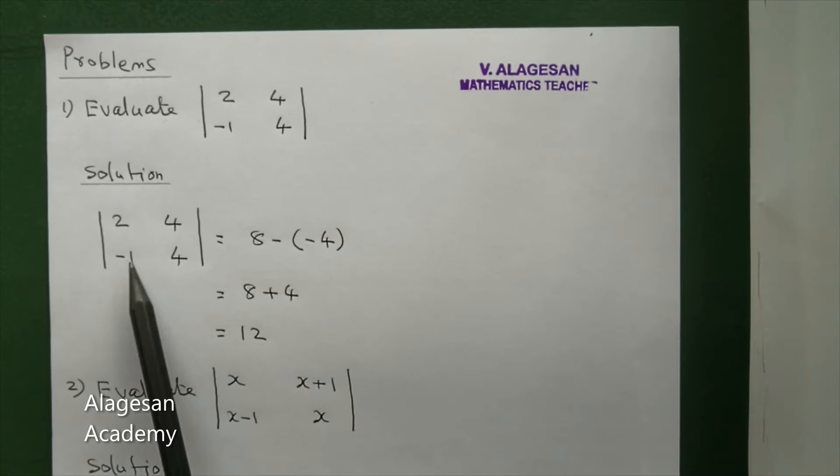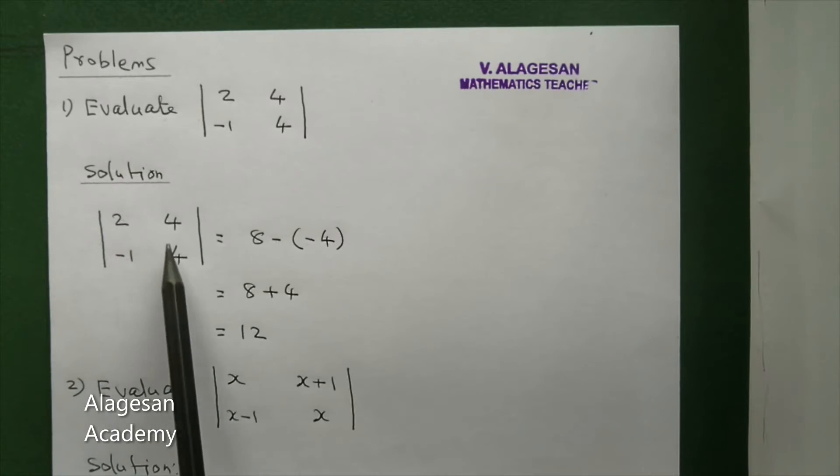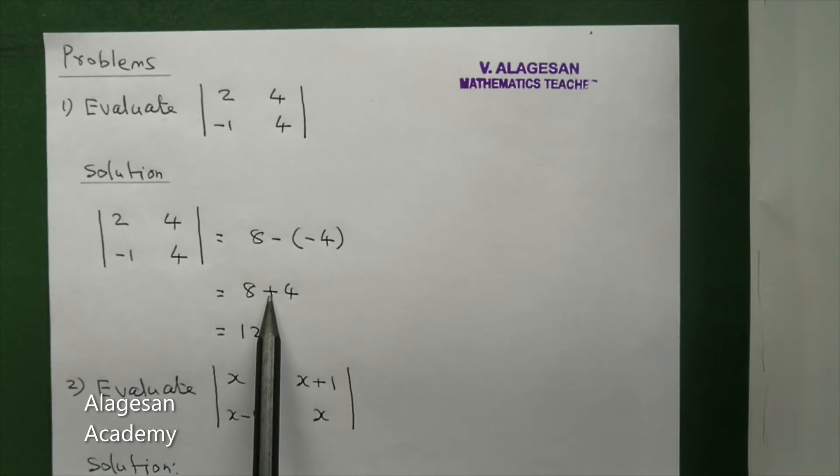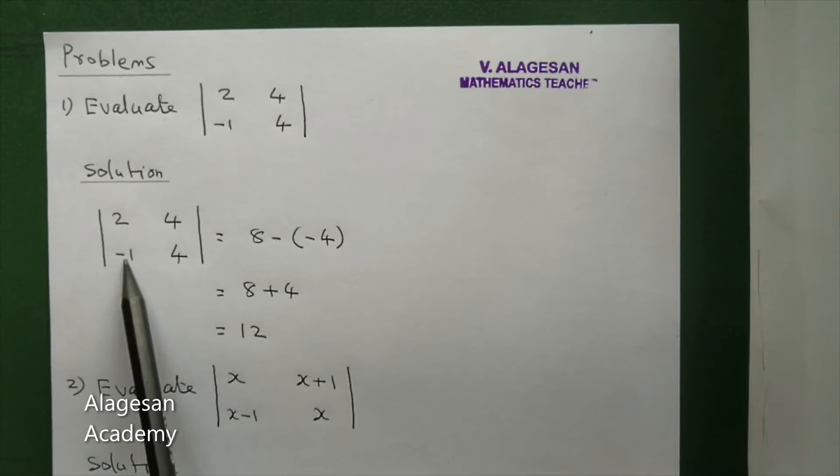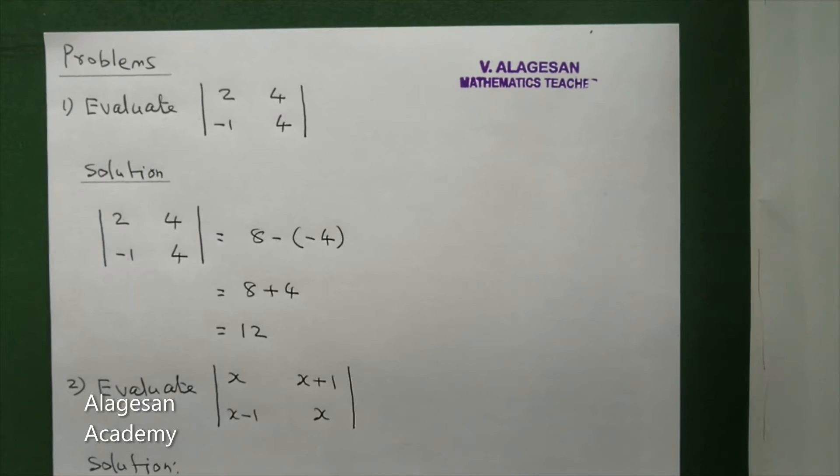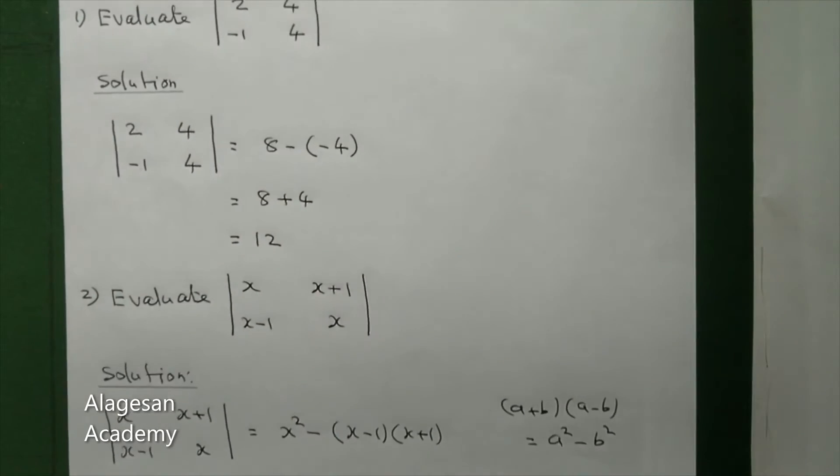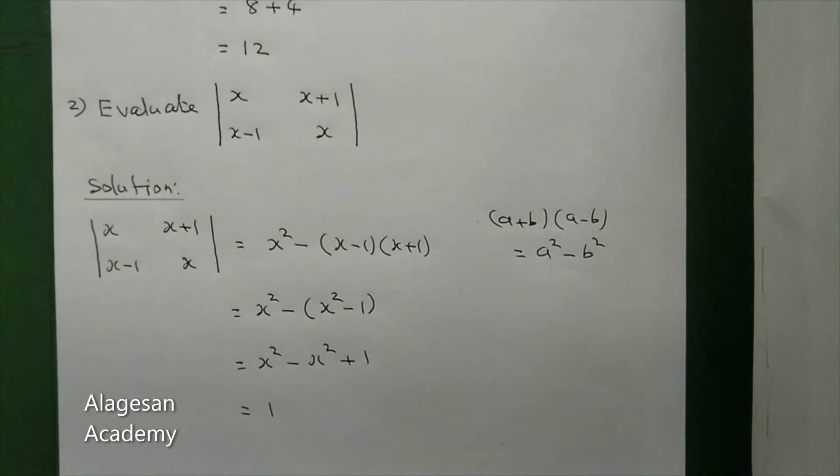If this step you can directly write 8 plus 4, but 2 into 4 is 8. Minus is here and into gives minus 4, so minus minus is plus 4, right? So 8 plus 4, add then we get 12. Can you understand this problem?